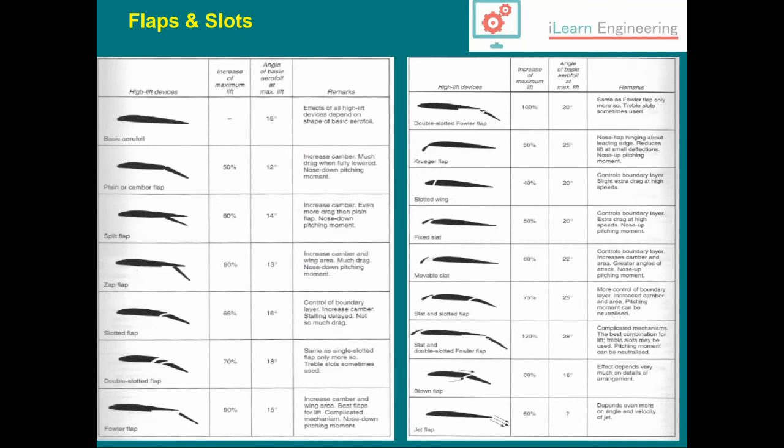Lots of high lift devices are available. On the top left we have the basic airfoil, and there are different examples of how you can increase the lift coefficient. Interestingly, the double slotted Fowler flap system increases maximum lift by 100%, so it doubles the lift available, which is quite formidable. You get an increase in drag as well, so you only want to use it at low speeds, at takeoff and landing.